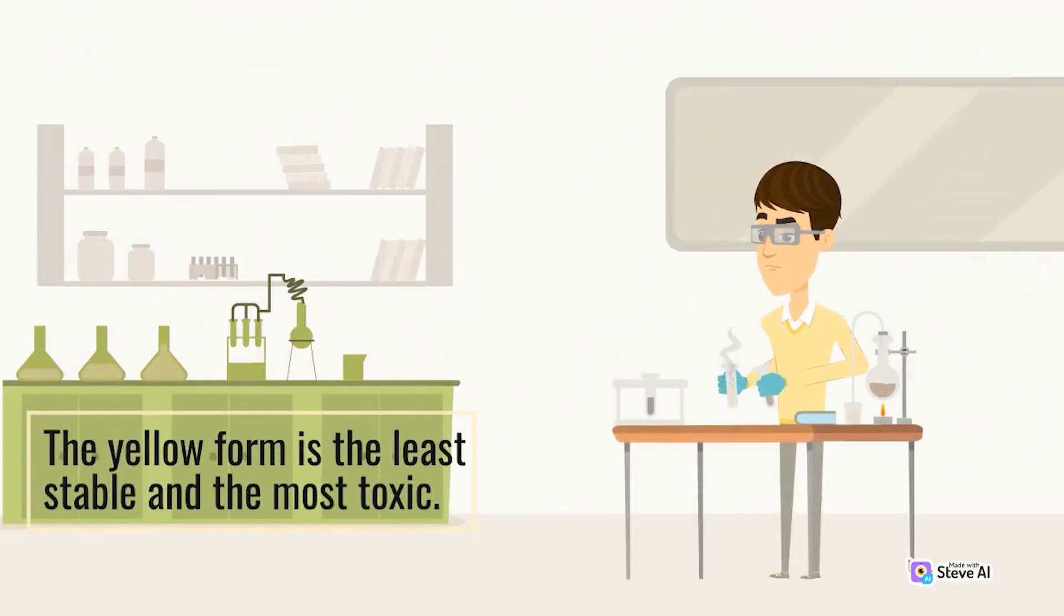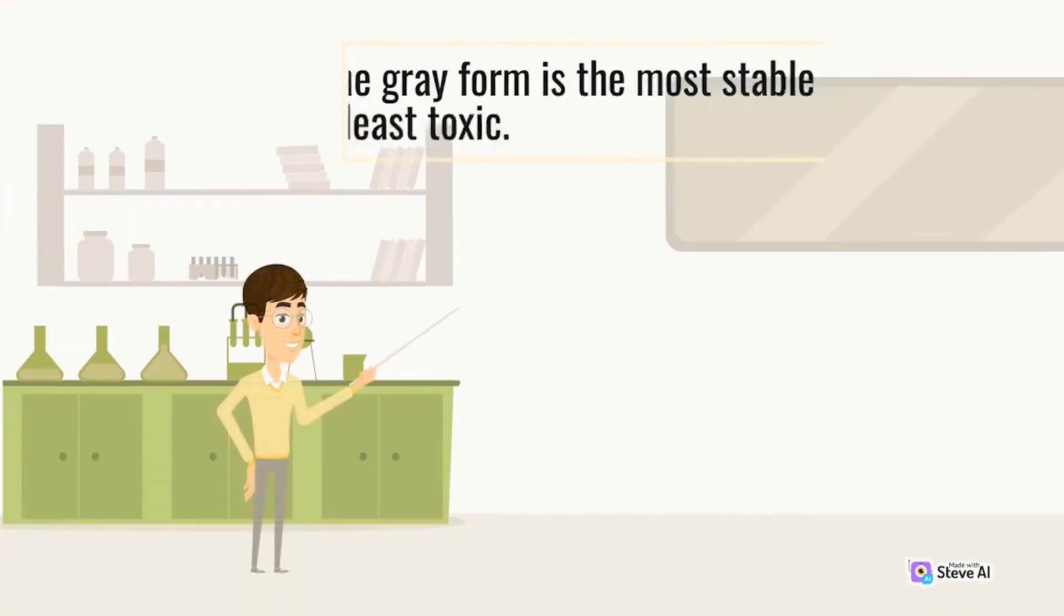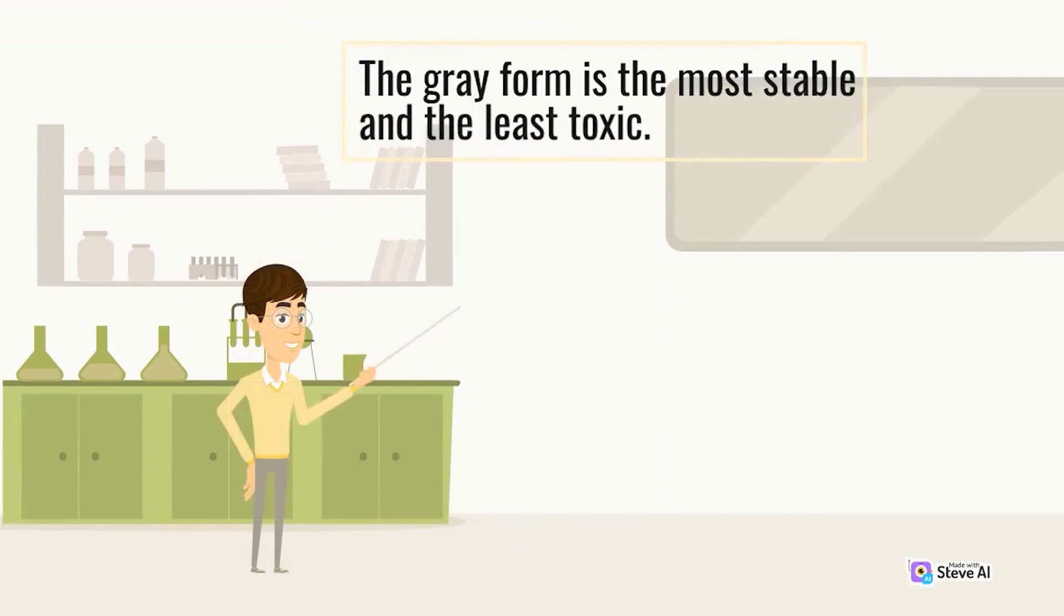The yellow form is the least stable and the most toxic. The gray form is the most stable and the least toxic.